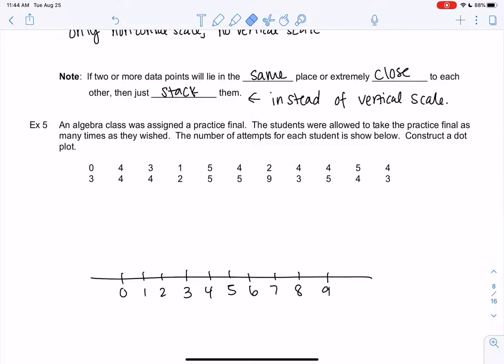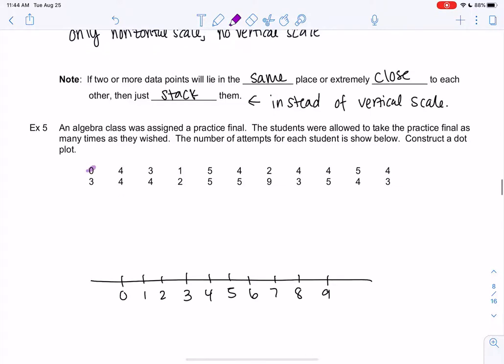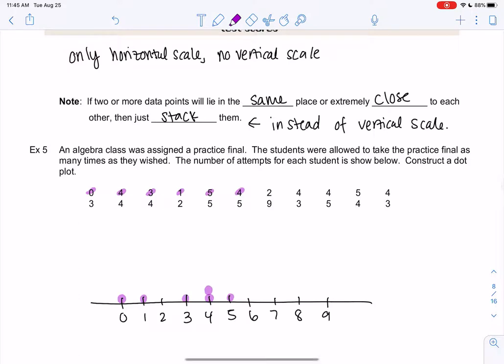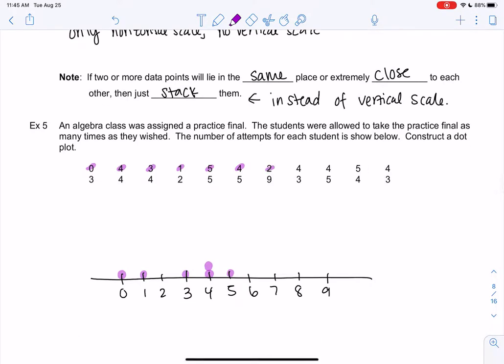What's also nice about a dot plot is I can just kind of go in order. So zero, I put a dot at zero. With the frequency tables, we were kind of counting them beforehand, but we can kind of just go in order. Add a dot at four, three, add a dot at one, five. Try to make your dots close to the same size. And then when I hit four again, I just stack it. So it makes it nice. So two, we get two more fours, five and a four. If you're feeling confident, pause and do this without me. Two more fours.